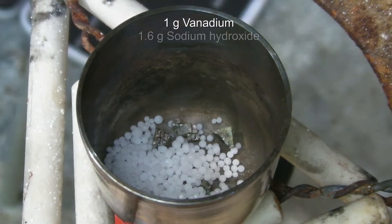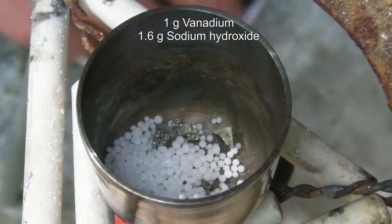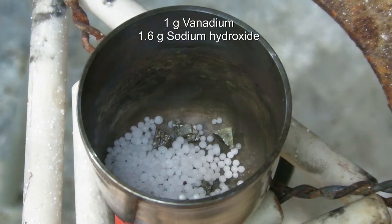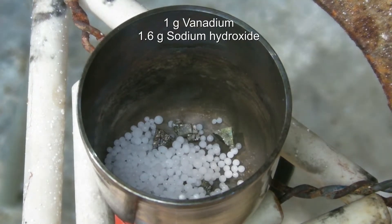One gram of vanadium and 1.6 grams of sodium hydroxide are added to a nickel crucible. A porcelain crucible can also be used, but this will react with the sodium hydroxide and decrease the yield. In addition to that, an etched crucible will break easier.